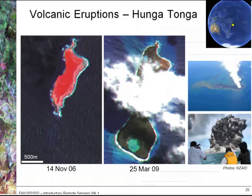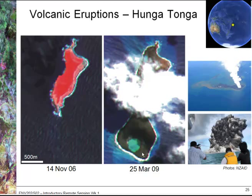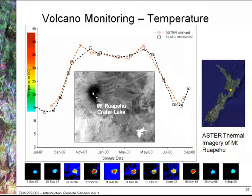Another example for volcanic eruptions: if you look at the first image on the left you'll see an island coloured in red — the red area is where there is dense vegetation. That image was taken in November 2006. The second image from March 2009 shows post-eruption, where a large part of the island has now been formed that was submarine prior to the eruption. You can also see a new crater lake, and you can see people taking photos of the eruption on a boat that's perhaps a little bit too close. We can also use remote sensing for monitoring temperature of volcanic lakes, giving an indication of when an eruption is perhaps likely to occur.